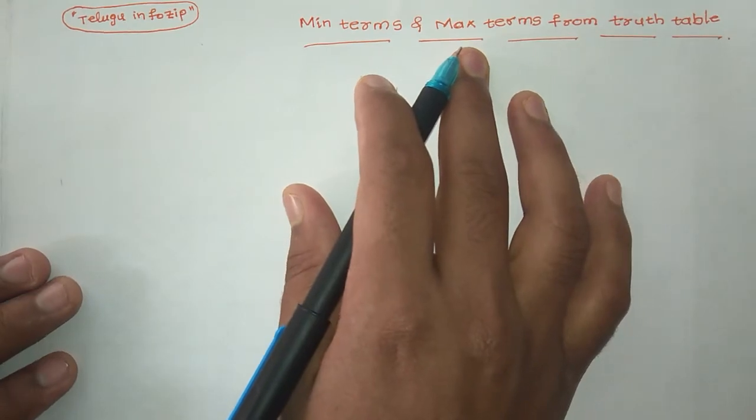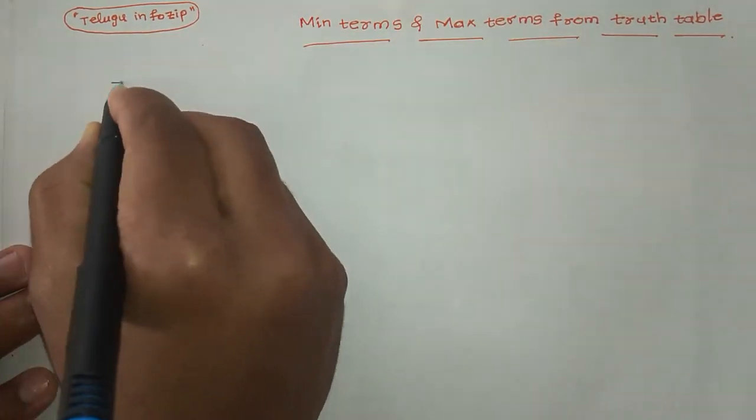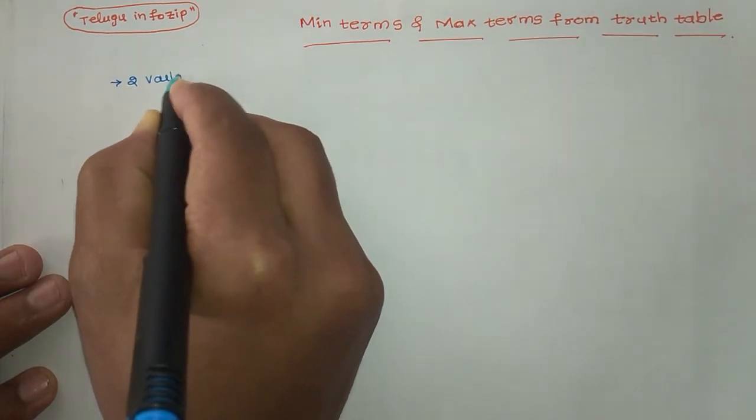So we will show you the two variables truth table. I will take two variables truth table.